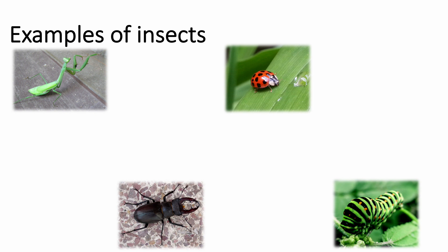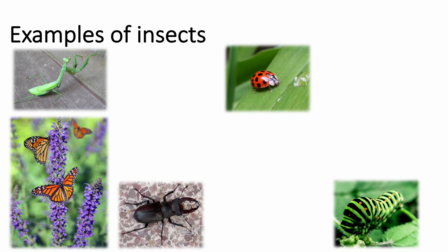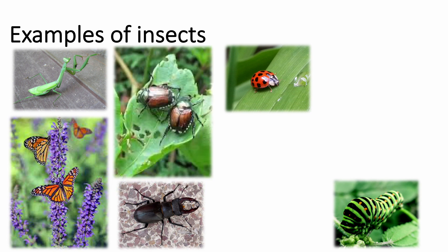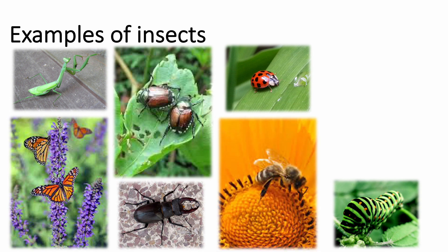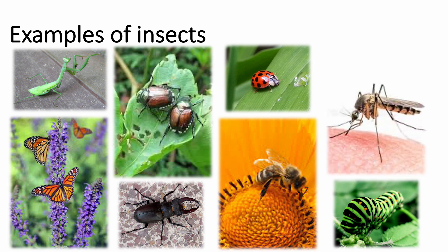Here are some examples of commonly encountered insects: a praying mantis in the top left, butterflies in the bottom left, Japanese beetles in the middle, a stag beetle at the bottom, a ladybug at the top, a honeybee, a mosquito, and a caterpillar. Keep in mind that some of these insects are considered beneficial and some are not, and some may be considered invasive and aren't actually native to your area.